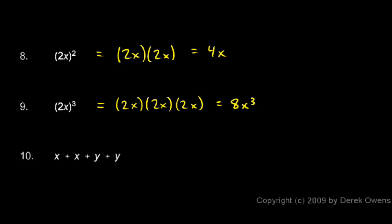In number 10, we have x + x + y + y. Well, x + x is 2x, and y + y is 2y. So we have 2x + 2y. In other words, we can combine the two x's because those are like terms, and we can combine the two y's because those are like terms. But we can't simplify it any further than that. 2x + 2y, and we're done.